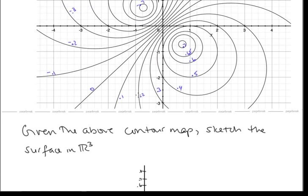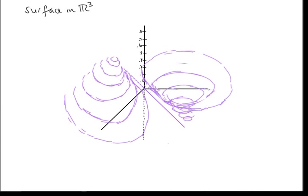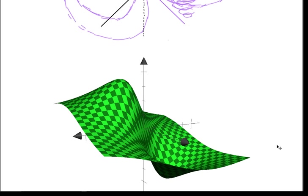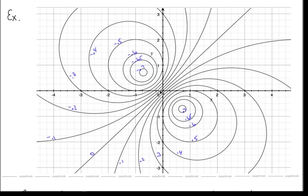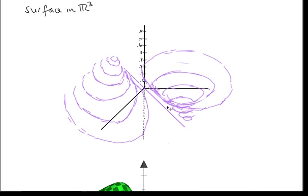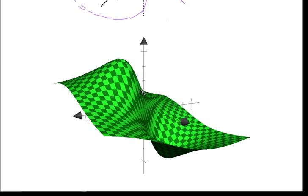For negative z values, we get a ditch on the other side of the graph. Sketching that in, we see a mountain on one side and a ditch on the other. When level curves are very close together, it means with little movement in x and y, you're getting a lot of change in z — indicating the steepest parts of the surface. This matches the computer-generated surface, which is much steeper where the curves are close together.